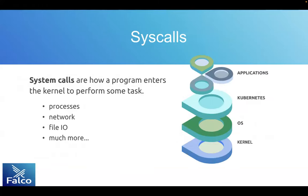Why is FALCO a good tool for this kind of exercise? The first point is they use a syscall architecture. That allows us to see anything from an application, anything happening from Kubernetes, the operating system — essentially kernel activity. We can look at process activity, network, read-write activity, file I/O, and a bunch of different scenarios. The other key aspect is it's real time. As a system call is executed, we can process that and trigger the event in real time.